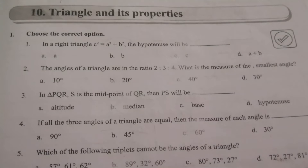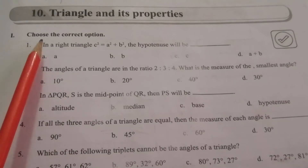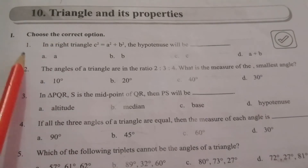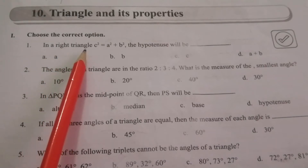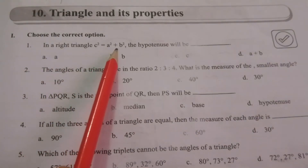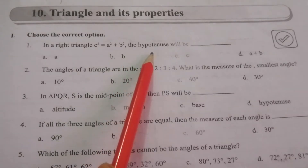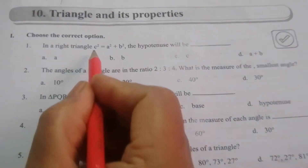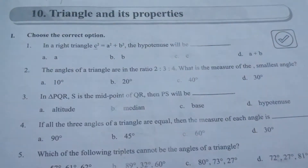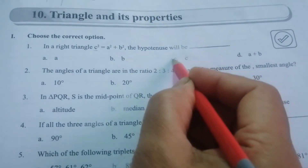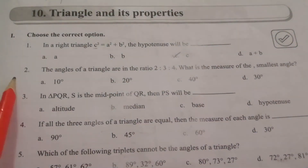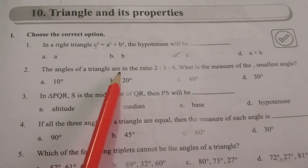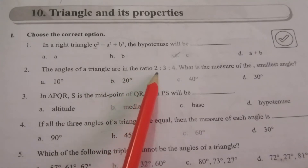In this video we are going to solve the chapter 'Triangle and its Properties' from your workbook. First topic: choose the correct option. Question 1: in a right triangle, C squared equals A squared plus B squared — the hypotenuse will be dash. The answer is the hypotenuse is C, so the option is C.